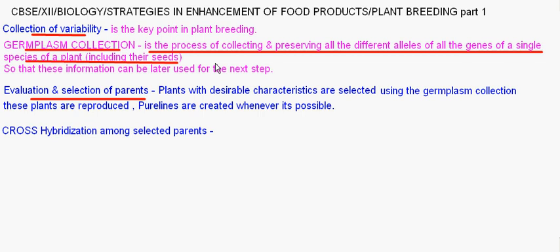The next step is evaluation and selection of parents. Parents with desirable characteristic features are selected using germplasm collection. These plants are then reproduced, and in the third sub-step, pure lines are created whenever possible.